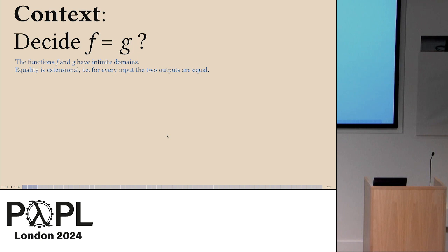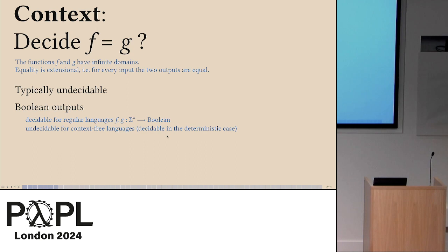I would assume that they have infinite domains, so you can't just run through all possible inputs. And the kind of equality is extensional. So for every input, the two outputs are equal. This is typically undecidable, like Turing machines. An important example is suppose your functions have Boolean inputs, also known as languages. You can decide this if they're regular languages by building a product automaton and checking if it has the appropriate properties.